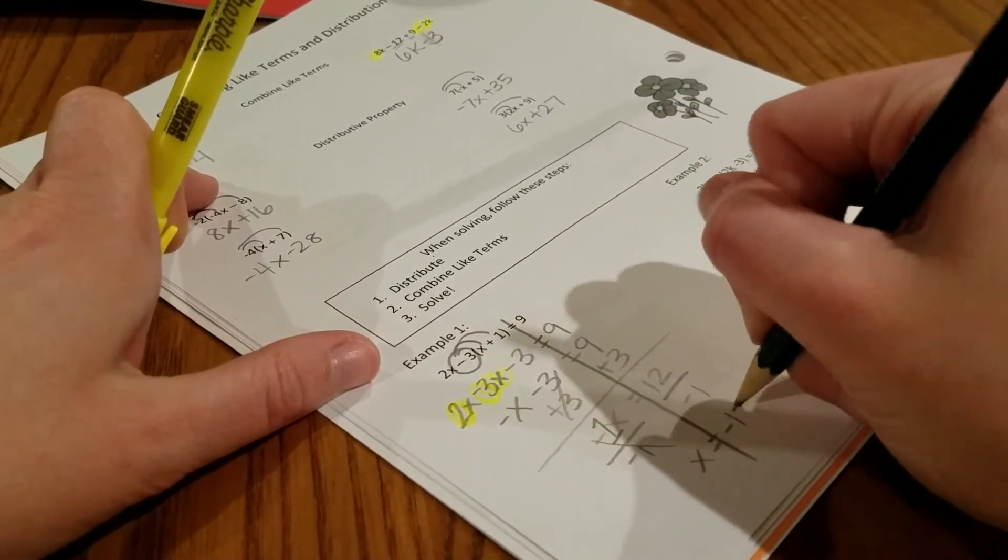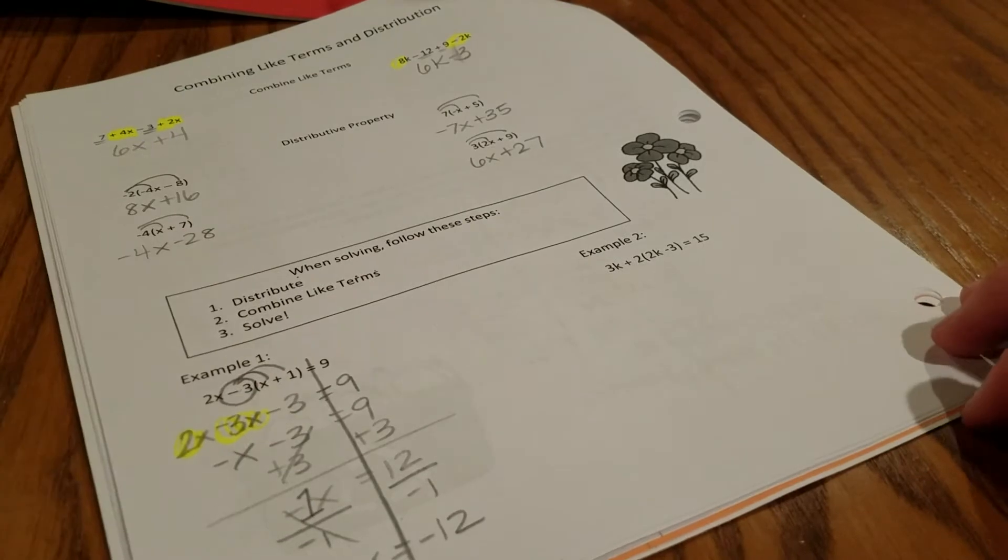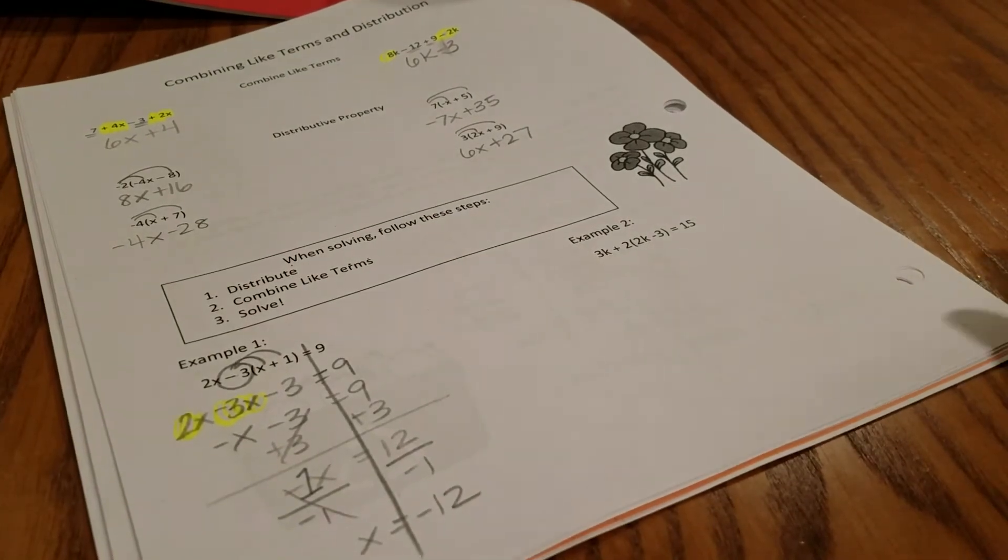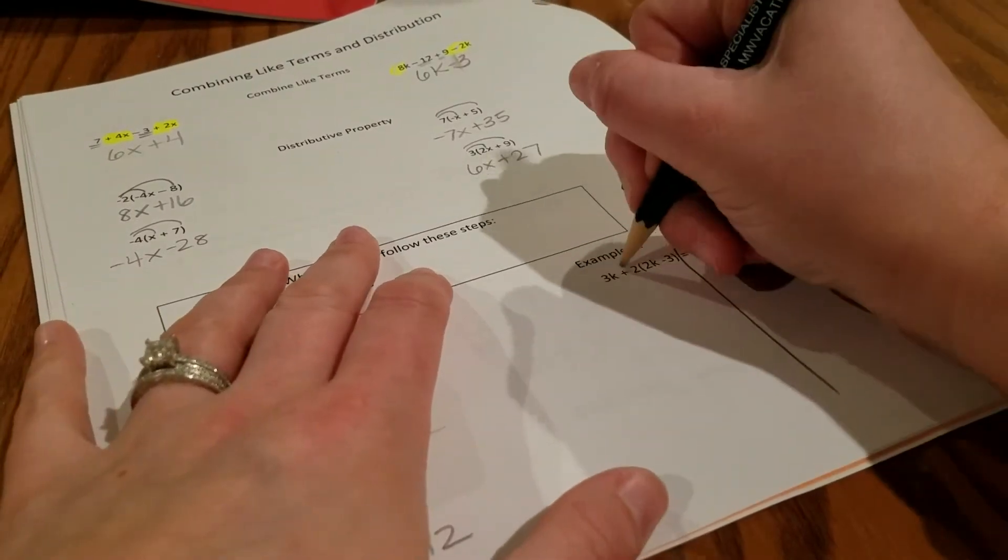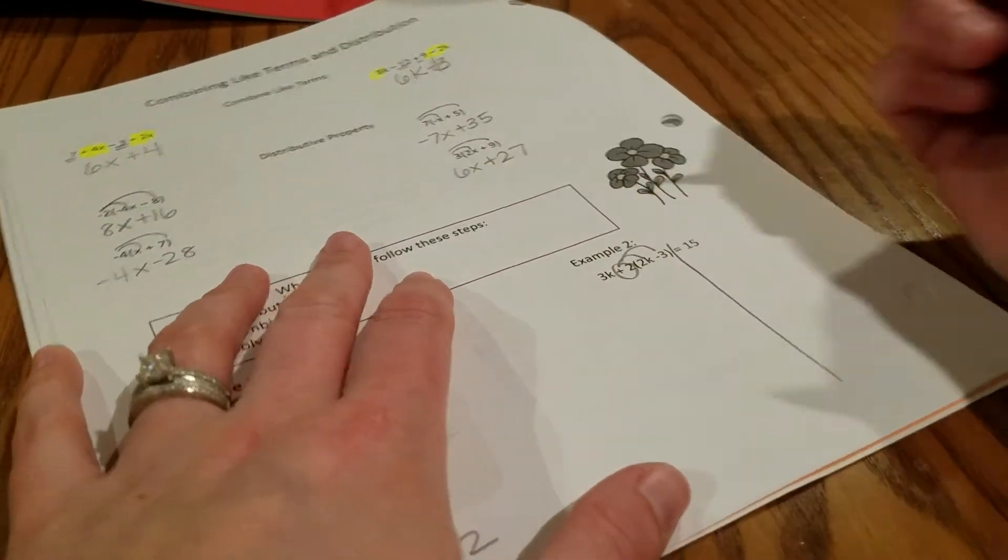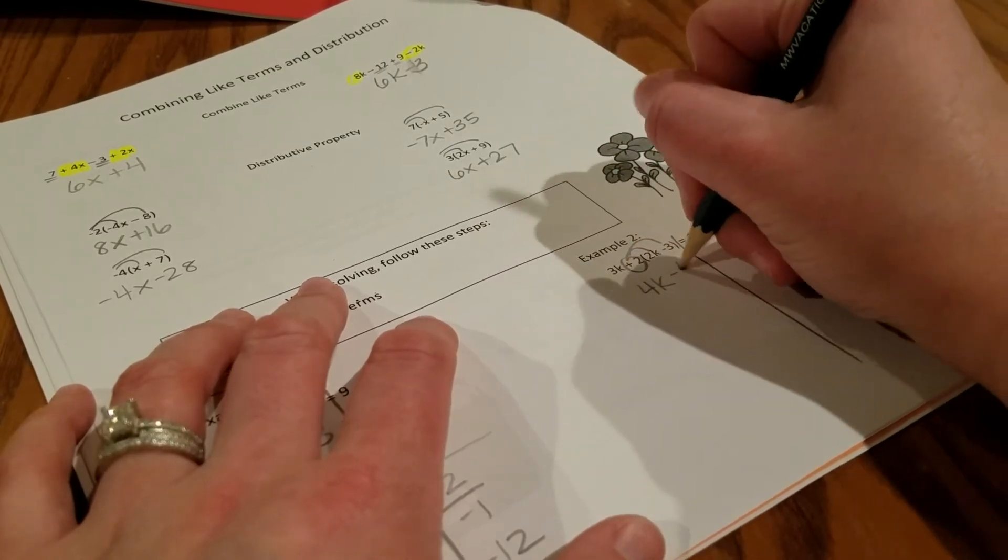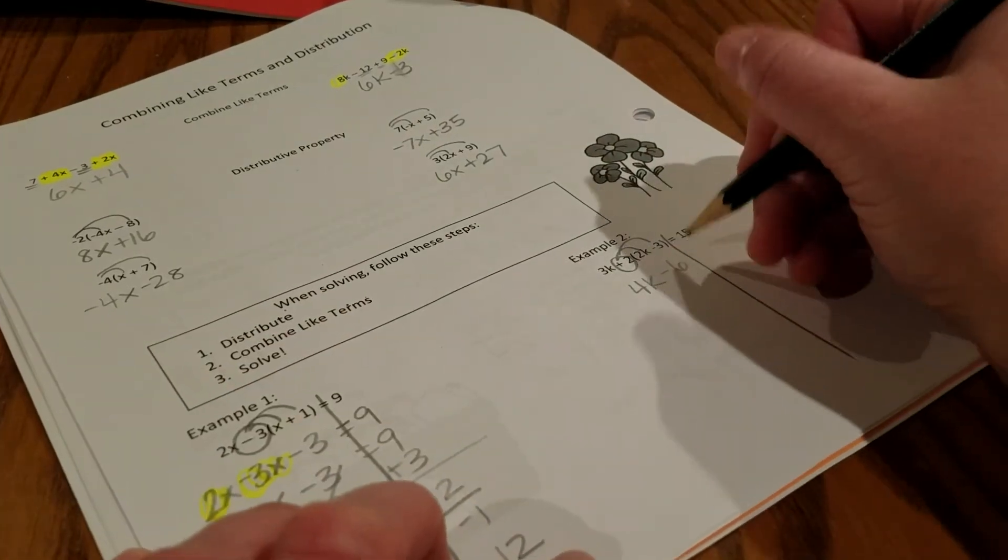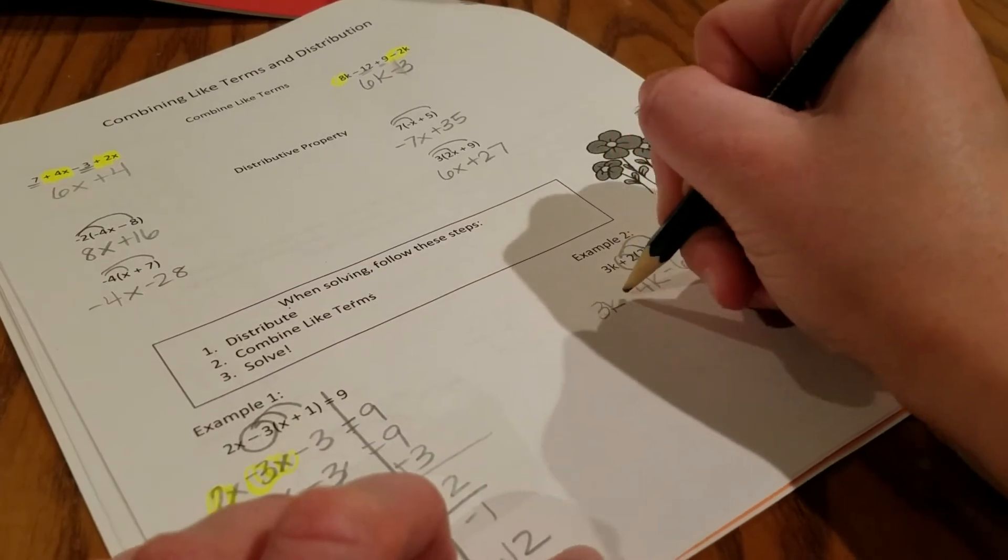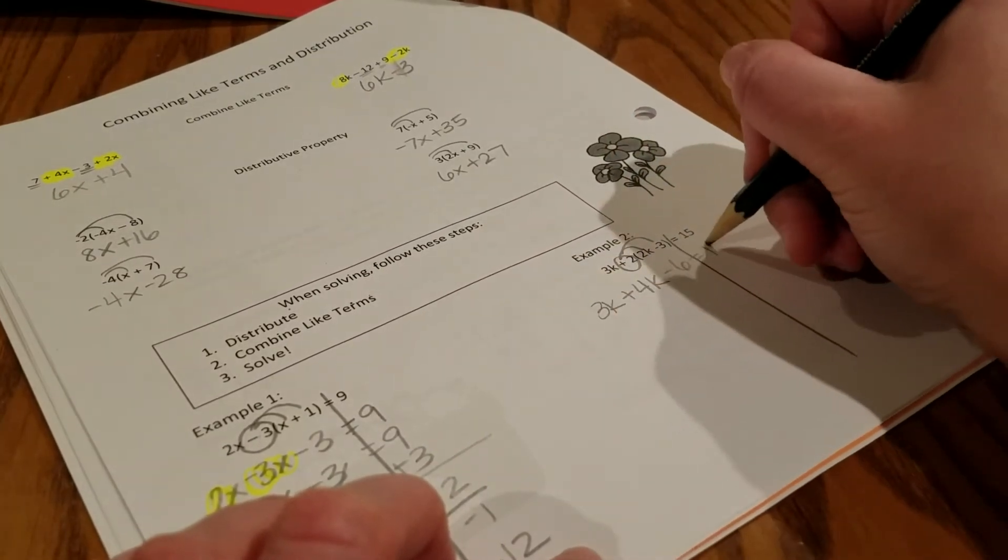In example number 2, we are going to distribute the 2, and it's a positive 2 this time. So 2 times 2k is 4k, and 2 times negative 3 is negative 6. And 3k is just chilling out front. Equals 15.